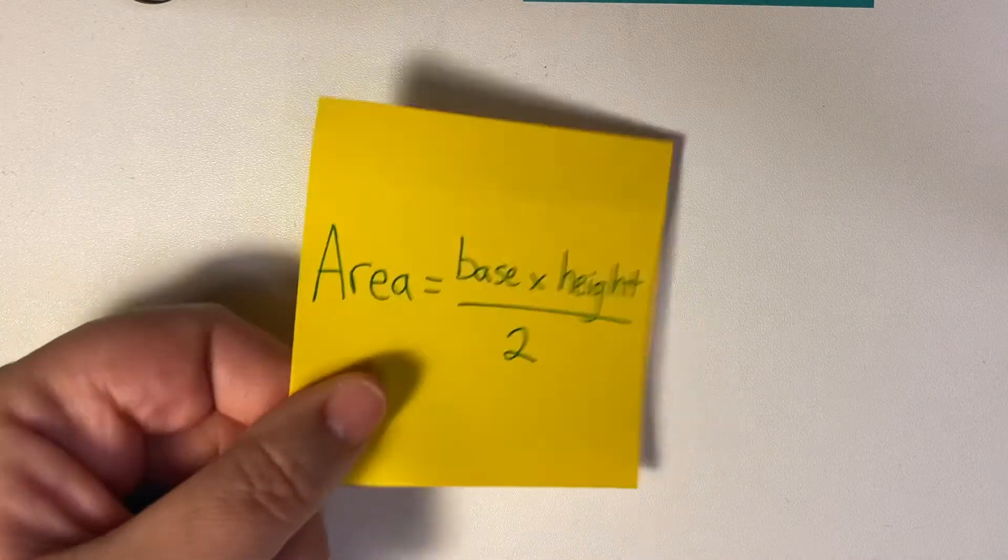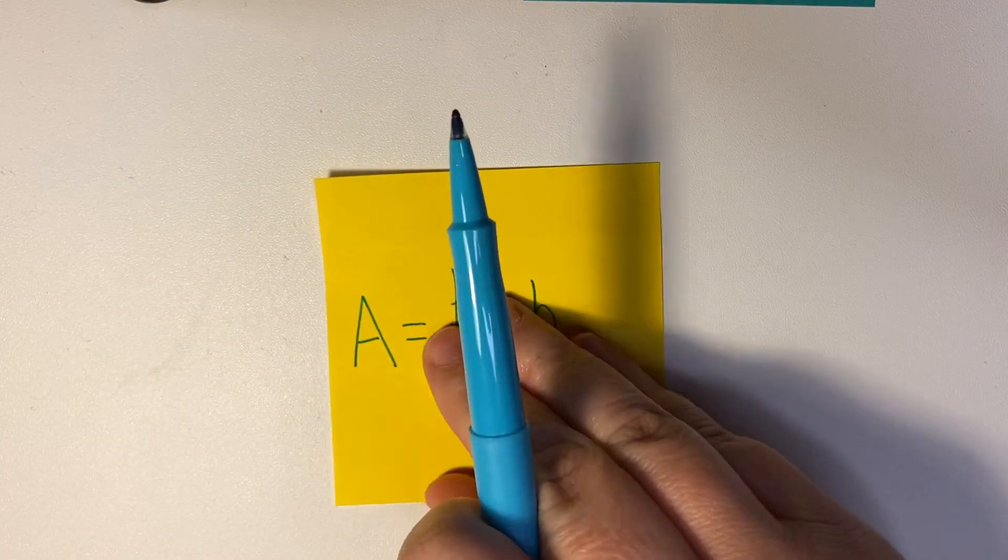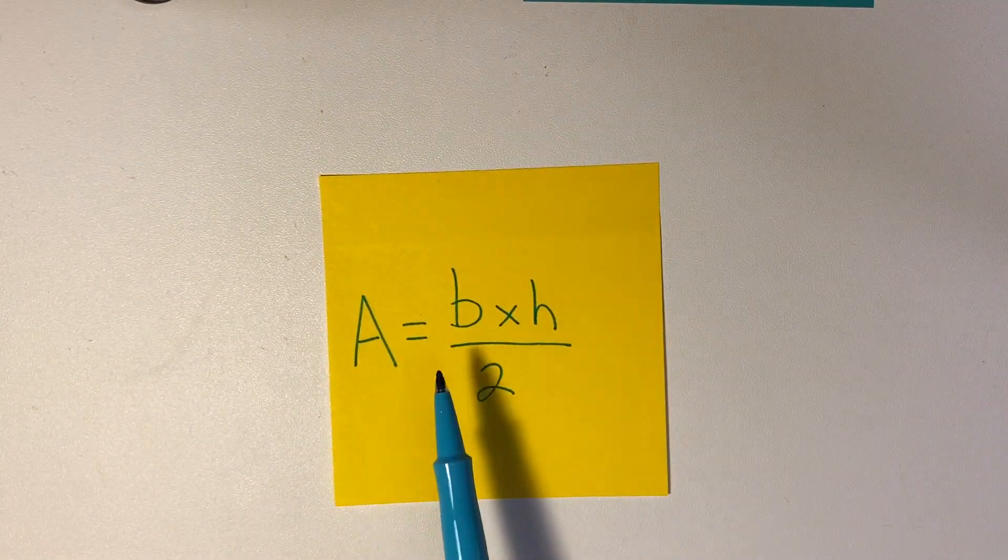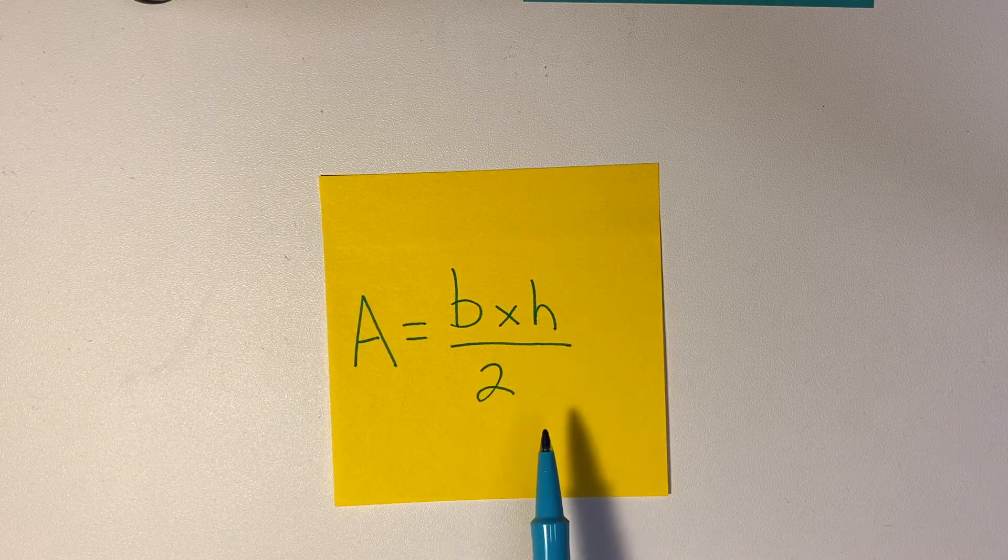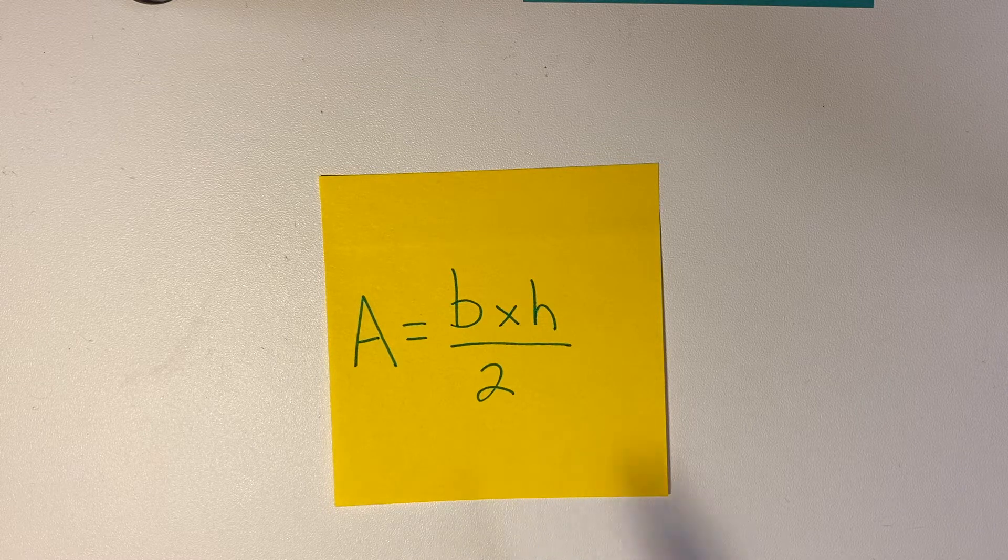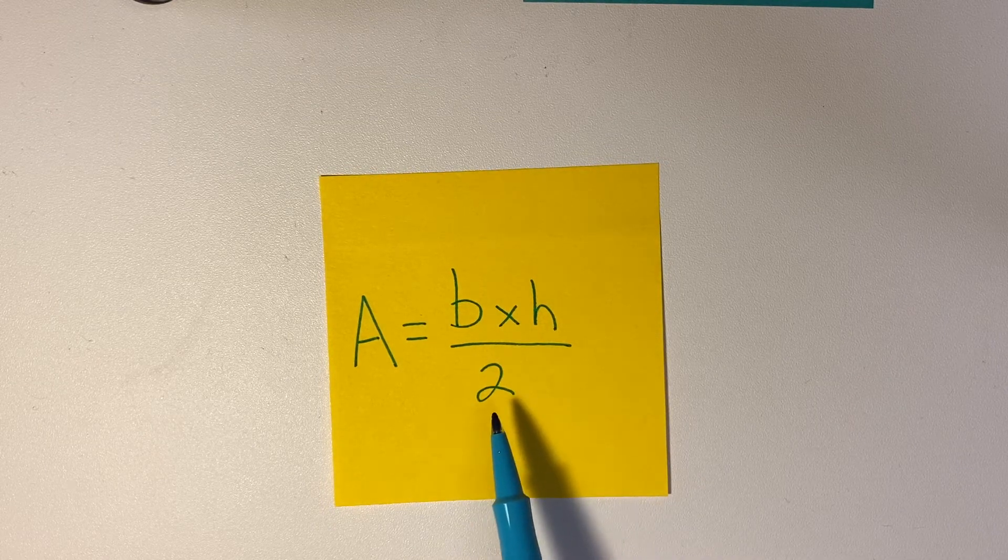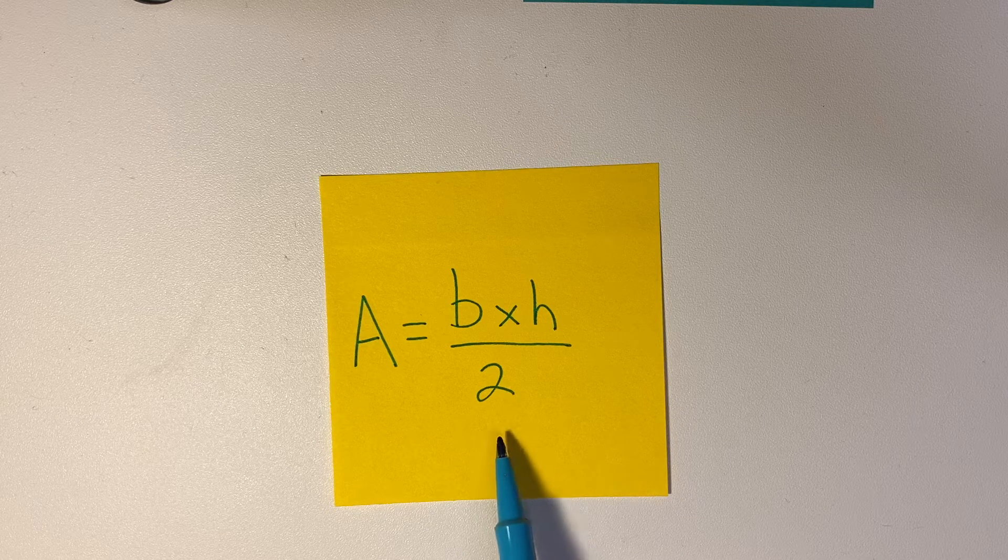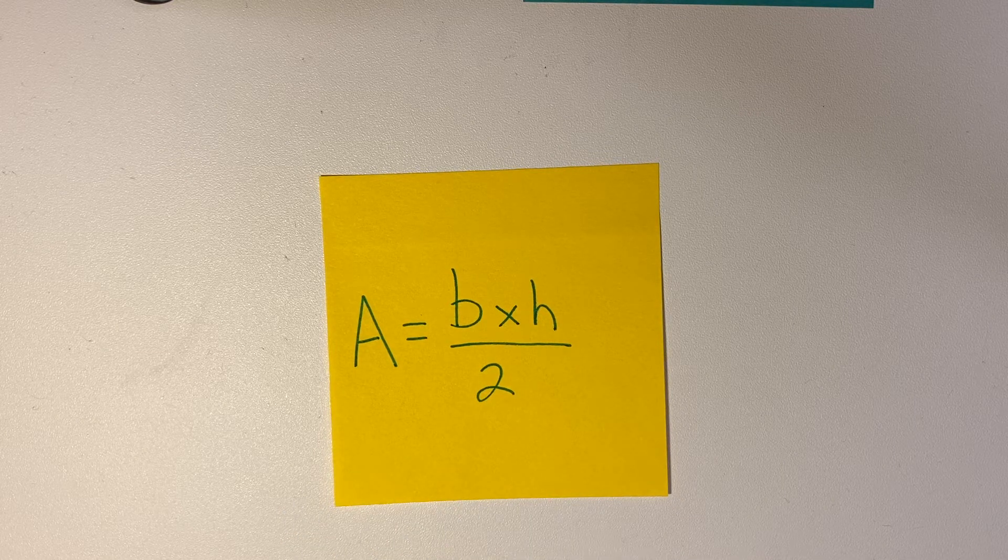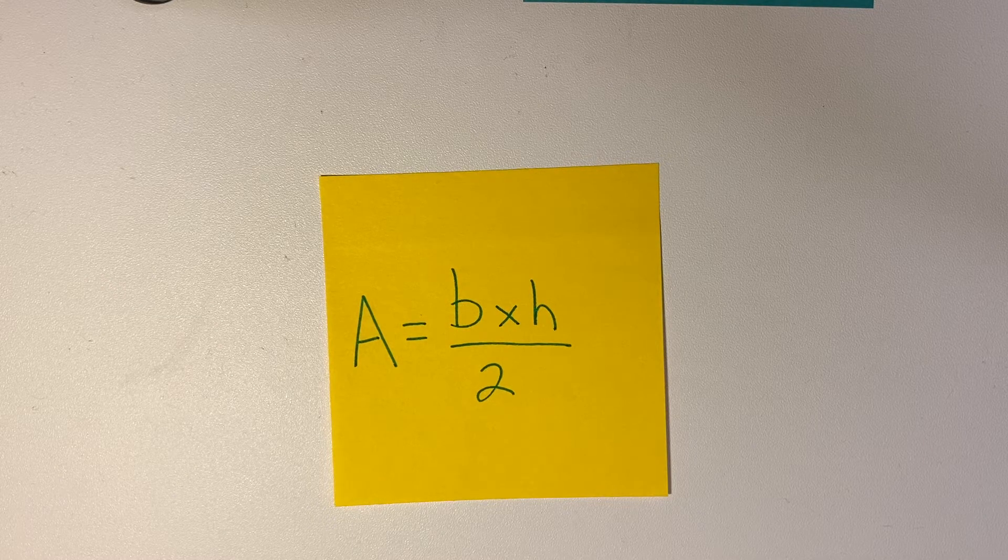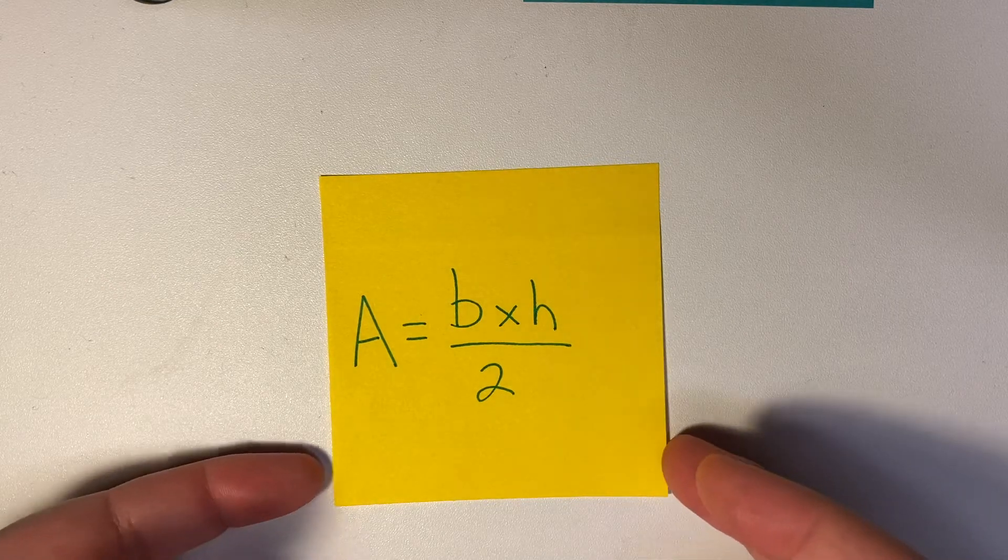And you might see it like this: area equals base times height divided by two. Sometimes it will say one-half base times height, which is another way of writing it. I just like this because it's really easy to know, oh I'm dividing by two instead of multiplying by one-half. Dividing by two seems to be a little bit easier to remember and to do.